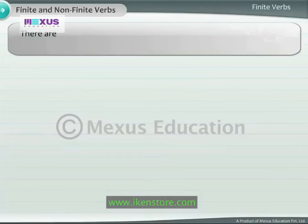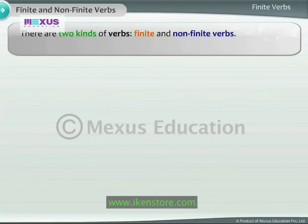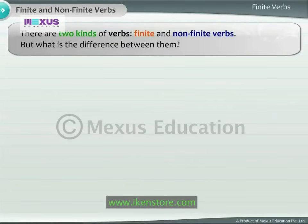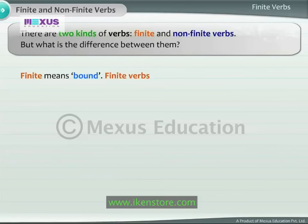There are two kinds of verbs: finite and non-finite verbs. But what is the difference between them? Let us first look at finite verbs. Finite means bound. Finite verbs must agree with the number and person of its subject.